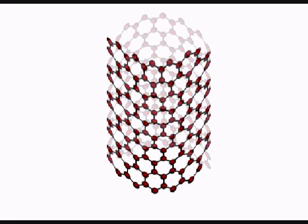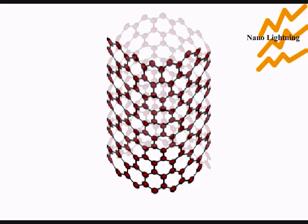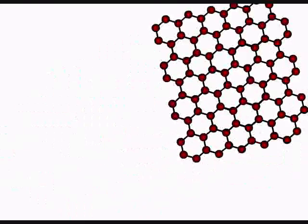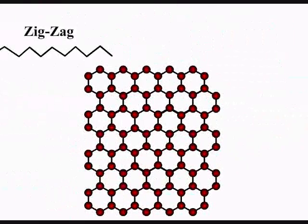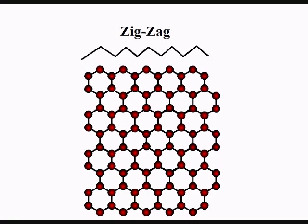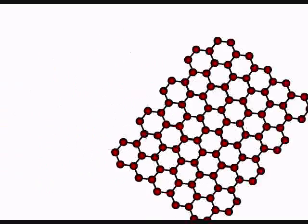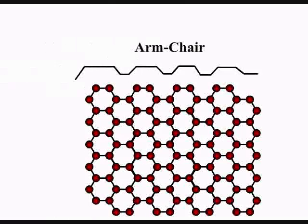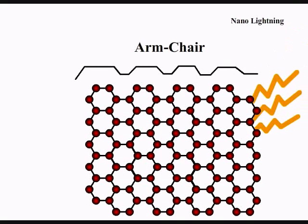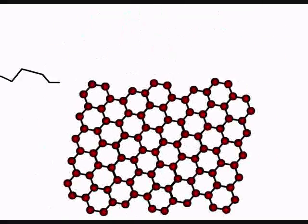There are three types of chiralities for carbon nanotubes. If M equals zero, the nanotube is zigzag. If N and M are equal to each other, the nanotube is armchair. Otherwise, the nanotube is chiral.